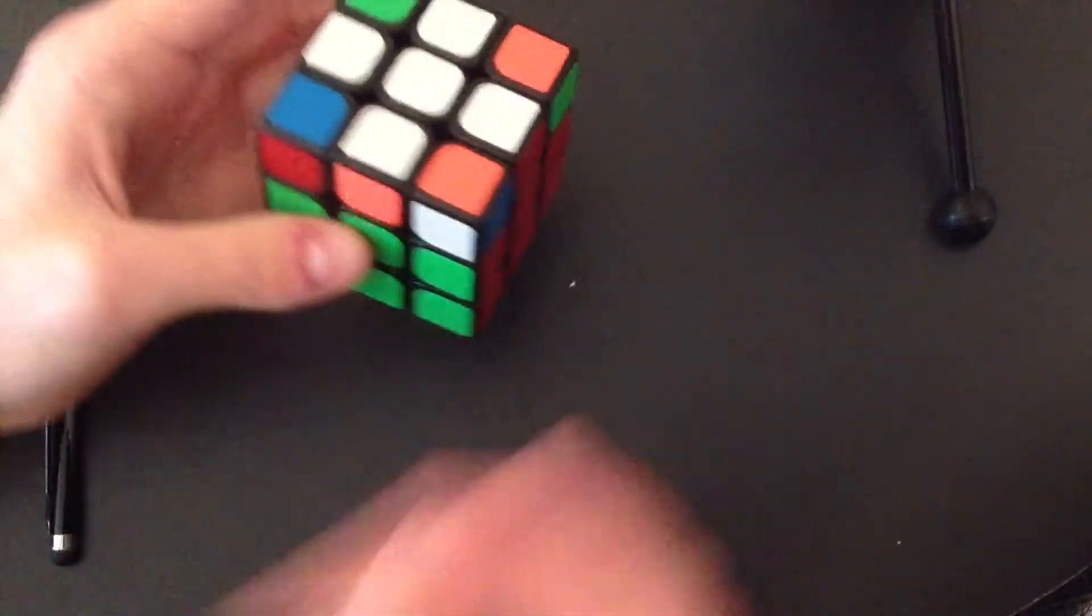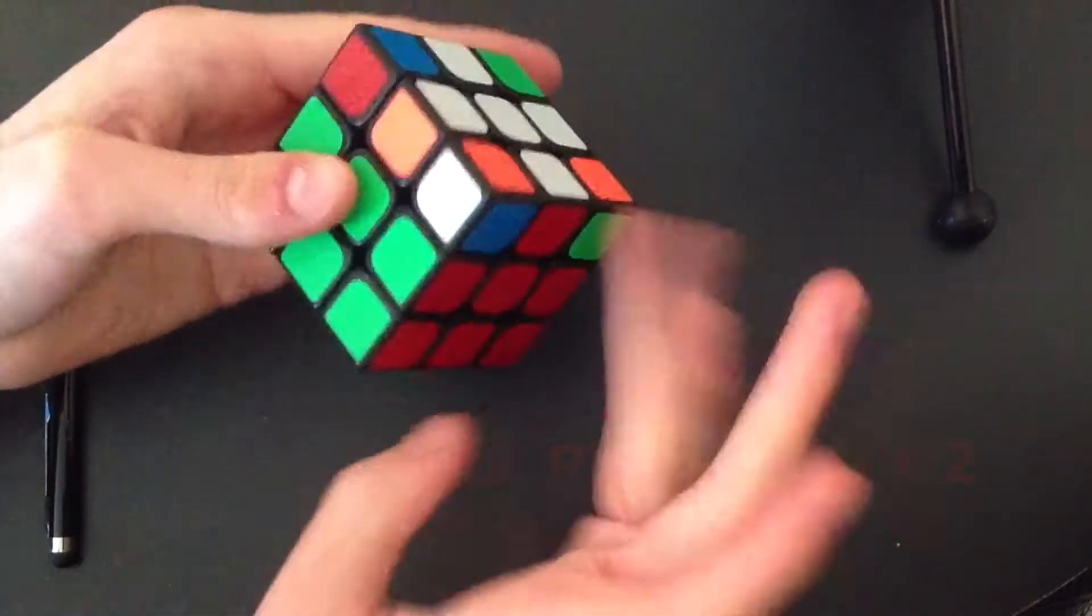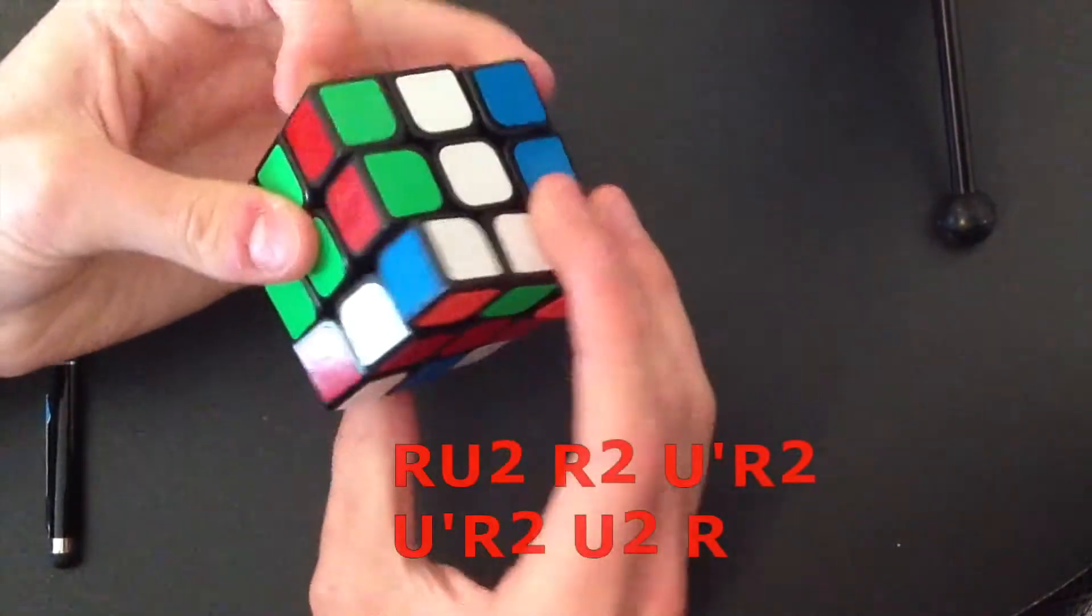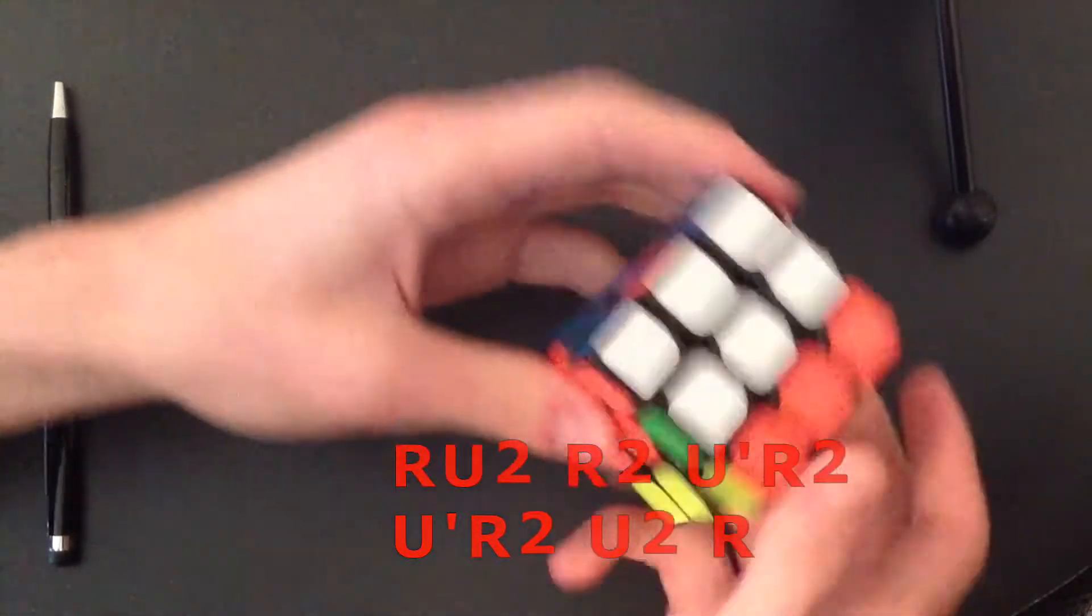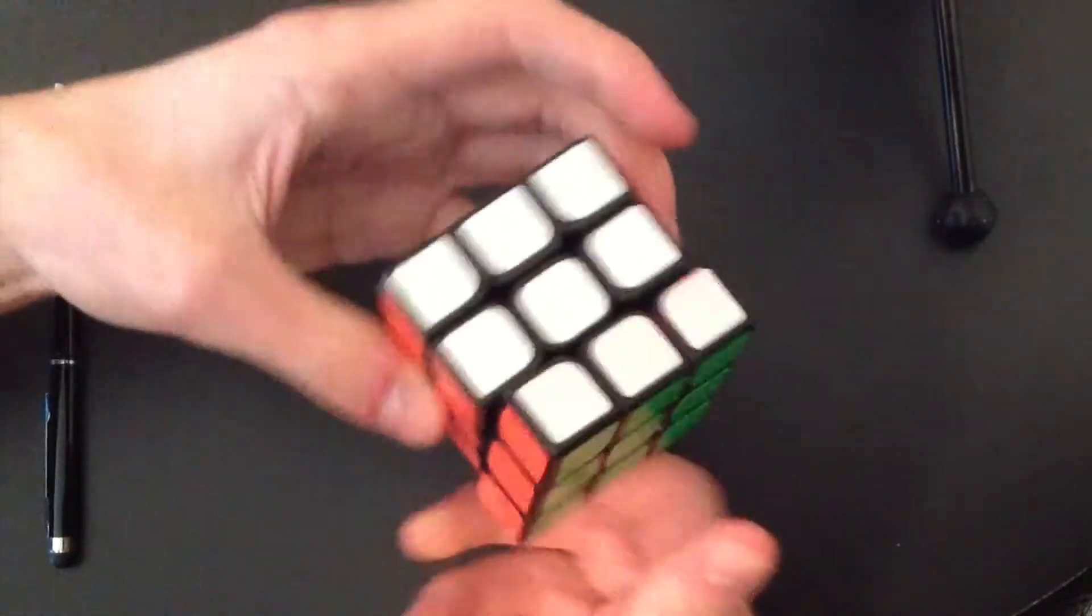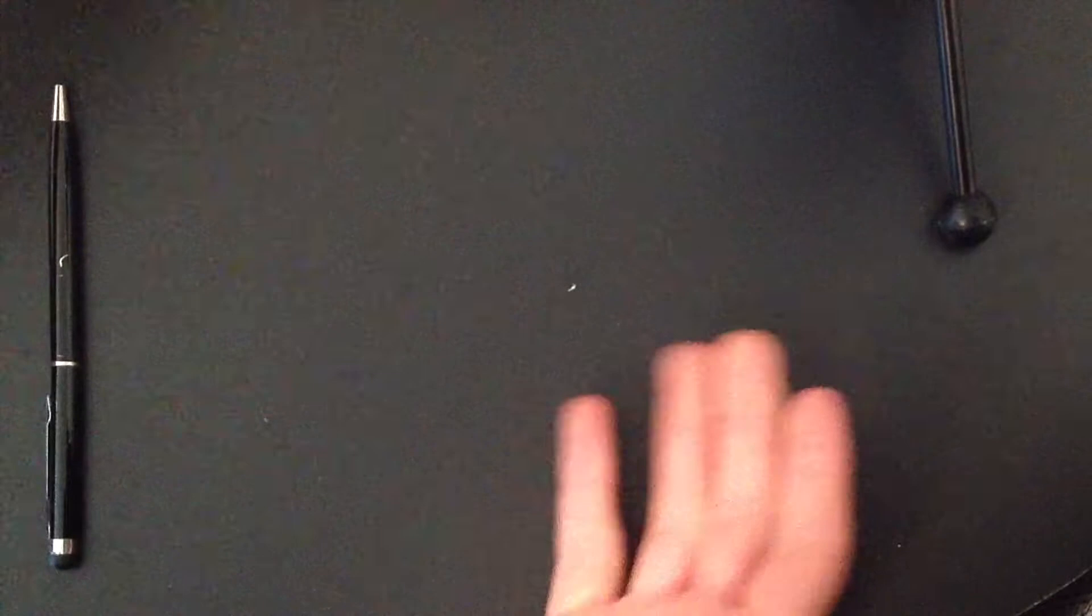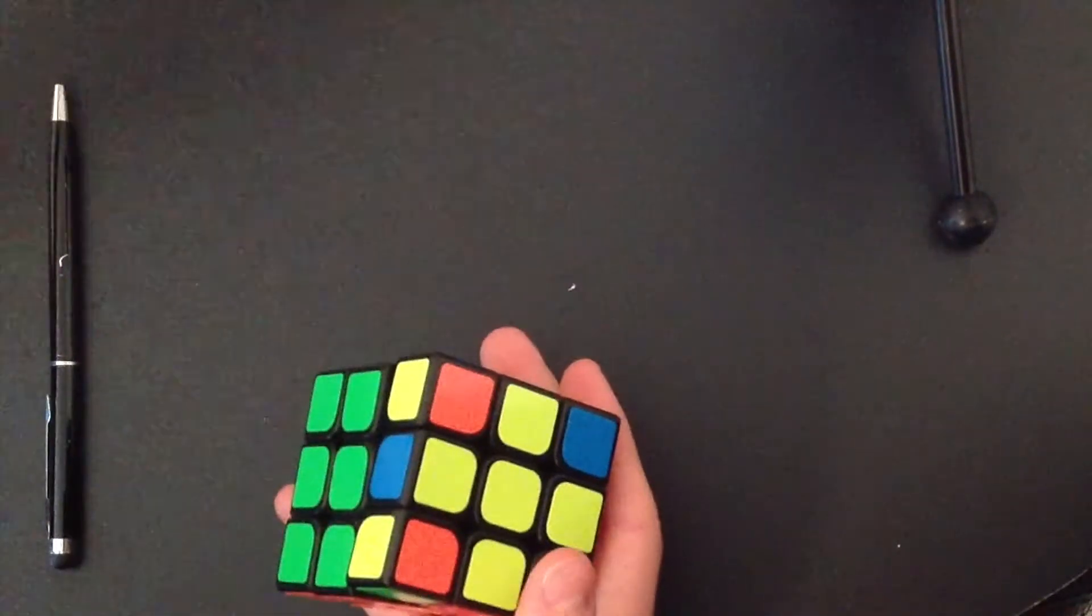The algorithm I use will be on the video and I'll just execute it now. So, you know, it's not too hard. Okay, leaving us with just an easy U-perm, as COLL does.